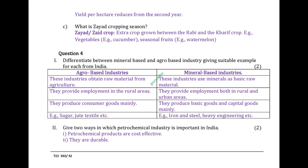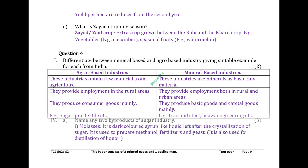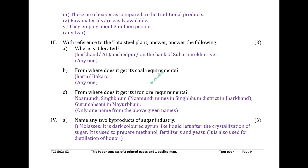Give two ways in which petrochemical industry is important in India. Petrochemical products are cost-effective. They are durable and cheaper compared to traditional products. Raw materials are easily available. They employ about 3 million people.